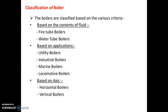So let us start with the classification of the boiler. The boiler is mainly classified on the basis of the content of the fluid. There are two types: the first is fire tube boiler and the second is water tube boiler. In case of the fire tube boiler, the fire continuously passes through the tubes and it gets surrounded by water. Exactly the reverse happens in case of the water tube boiler — the water continuously flows through the tubes and it gets surrounded by fire.